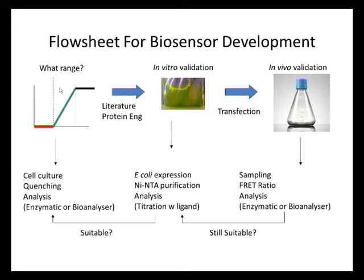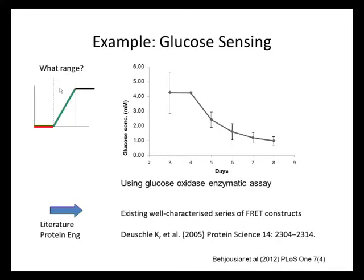The example I'm going to give is glucose biosensing in suspension CHO cells — Chinese hamster ovary cells. The first thing we need to know is what is the range of concentration of glucose experienced intracellularly over the course of a CHO cell culture. This plot shows the glucose concentration over the culture day, done using a typical glucose oxidase enzymatic assay. From days three to eight, you see concentrations in the millimolar to high micromolar range. Looking in the literature, there is a series of existing well-characterized FRET constructs for detecting glucose from Wolf-Armer's lab at Carnegie Institute in Stanford, and these have been optimized to give maximal signal-to-noise ratio and to measure a range of glucose concentrations.